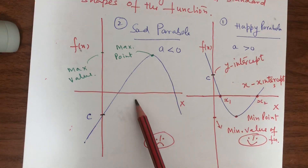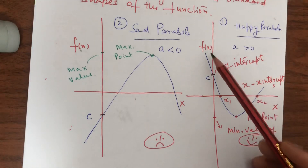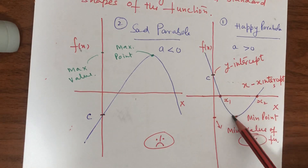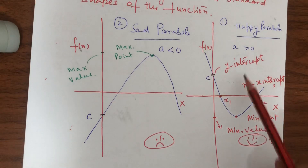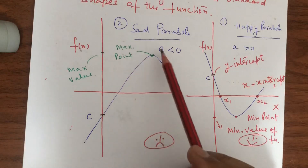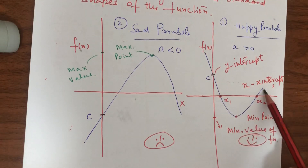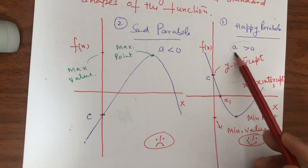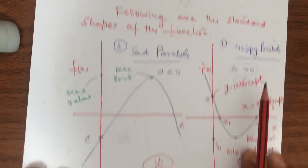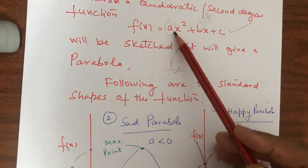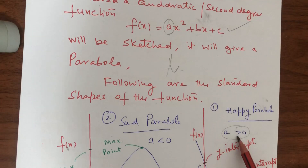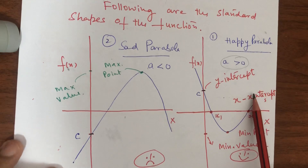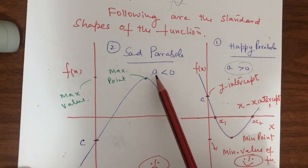Either we get this parabola opening upward, or we get this parabola opening downward. This one is called a happy parabola, and this one is called a sad parabola. The shape depends on the constant 'a', the number with x² in the function. If 'a' is positive, the parabola is happy; if 'a' is negative, the parabola is sad.